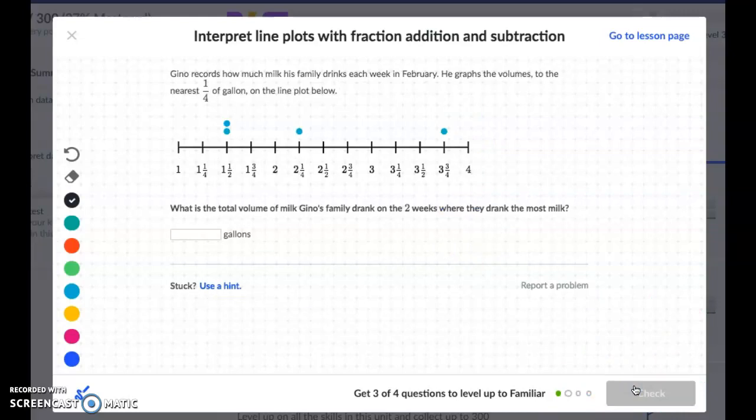Gino records how much milk his family drinks each week in February. He graphs the volumes to the nearest ¼ of a gallon on the line plot below. So here you can see that they did 1½ and another day of 1½, a week, excuse me. They did a week of 2¼ and a week of 3¾. What is the total volume of milk Gino's family drank on the two weeks where they drank the most milk?